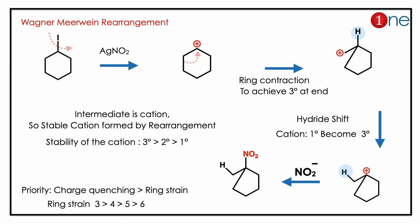Due to the strain at that carbon, stabilization of the cation occurs. In the next step, migration of hydrogen happens and you have a stable tertiary cation. Then the cation is quenched by nitrate, so finally you have a nitroalkane as the product.